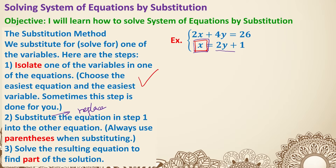So x and 2y plus 1 are the same. If we do the substitution, we replace this x in the other equation. So 2, and then that x needs to be gone because it's being replaced by 2y plus 1. Always use parentheses because you are replacing x as a whole by 2y plus 1. Then keep copying down the rest: plus 4y equals 26. Now this is an equation you can totally solve — it's only one variable.